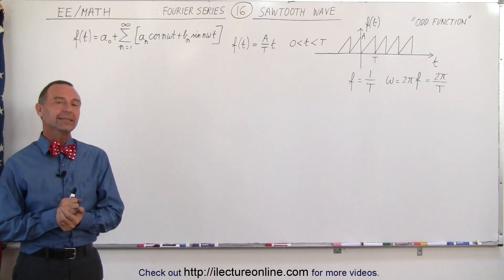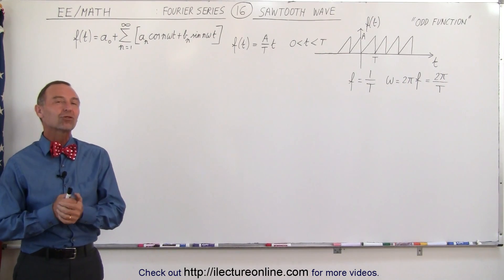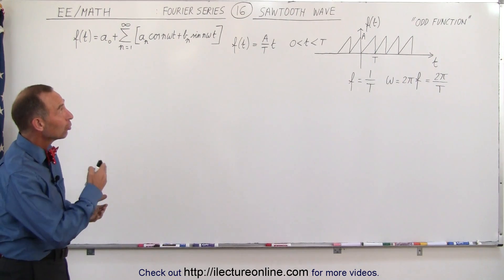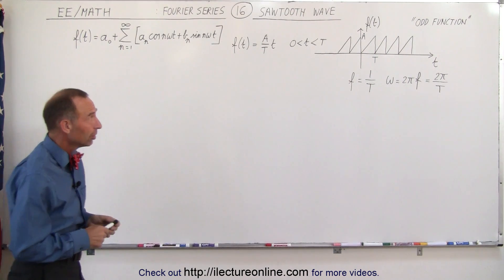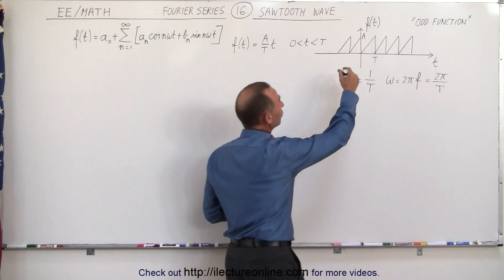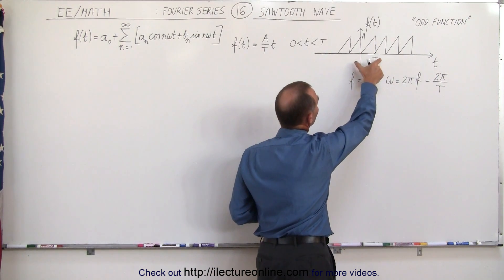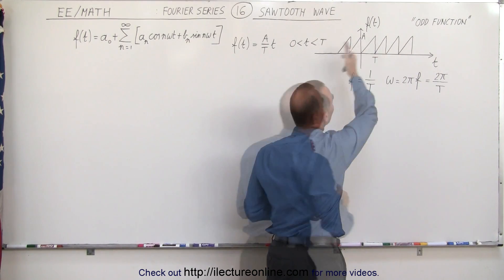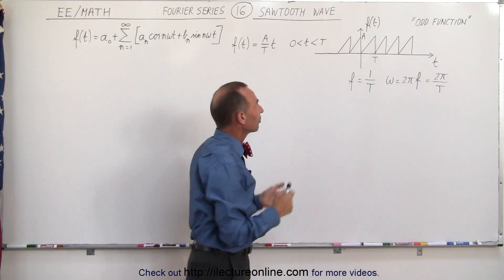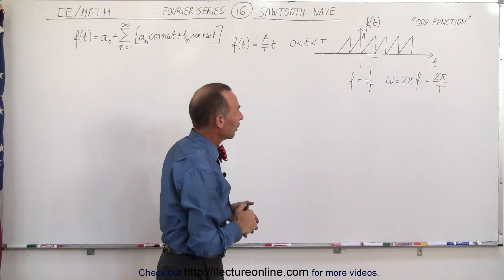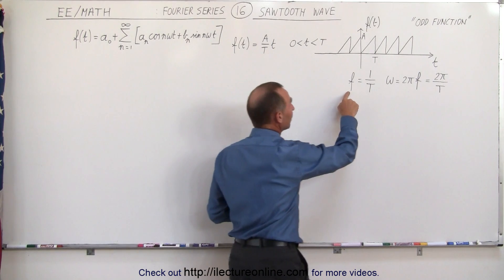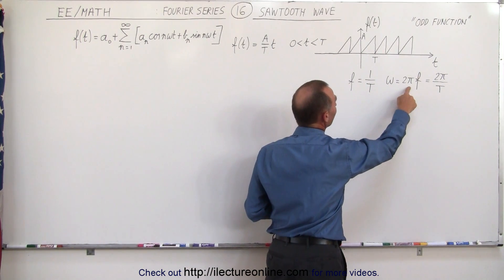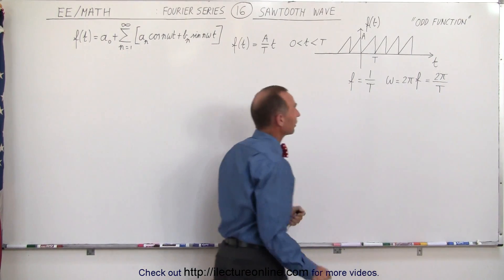Welcome to Electron Line. Let's find the Fourier series of the sawtooth wave function. Notice it looks just like a sawtooth — the period is equal to T and the amplitude is equal to A. It repeats on both sides of the vertical axis. The frequency is 1 over the period, and the angular frequency is 2π over the period.